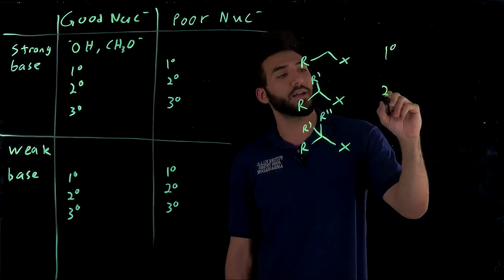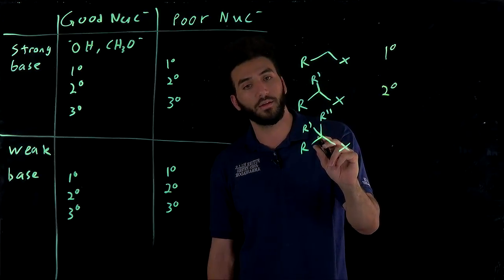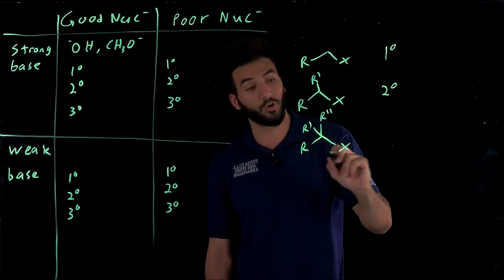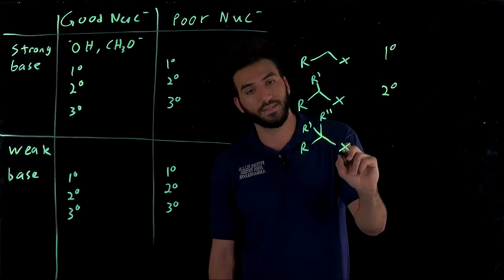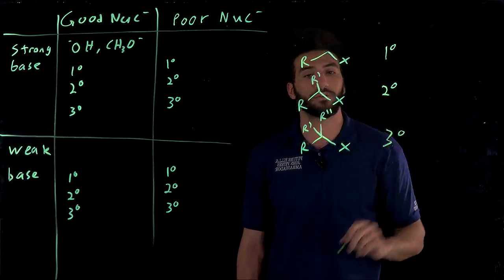So this carbon right here is primary because there's only one R group. This is going to be secondary because there are two R groups, and this is going to be tertiary because there are three R groups attached to the carbon that has this alkyl halide, that has this halide group, and that's tertiary.